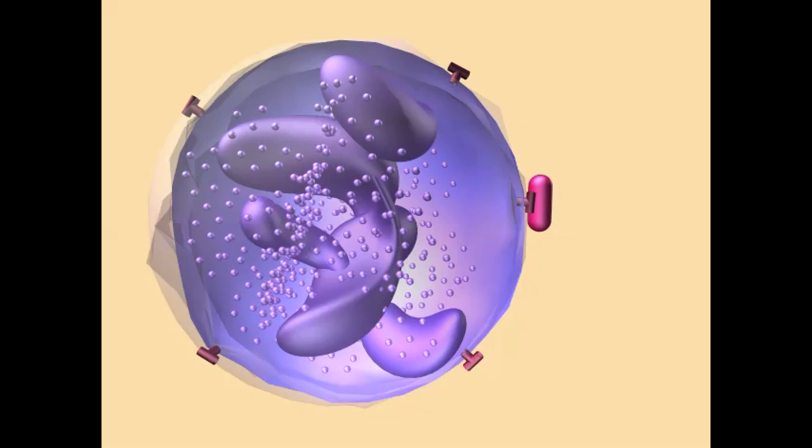After the microbe binds, the cell membrane begins to engulf inward, forming a pocket, pulling the microbe into the interior of the cell.